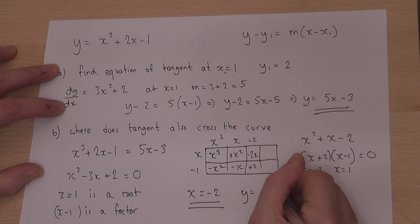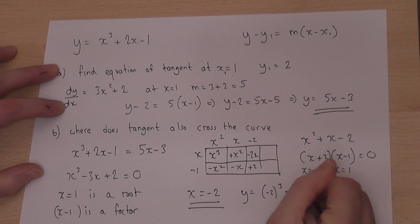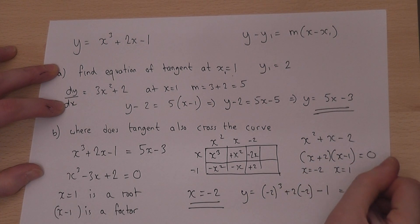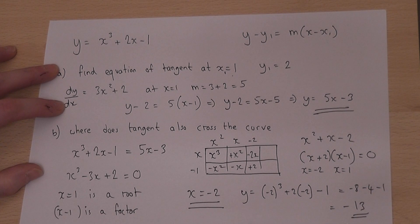y equals minus 2 cubed plus 2 times minus 2, take away 1, which equals minus 8, minus 4, take 1, which is minus 13. So the curve and the tangent also intersect at the coordinate minus 2, minus 13.